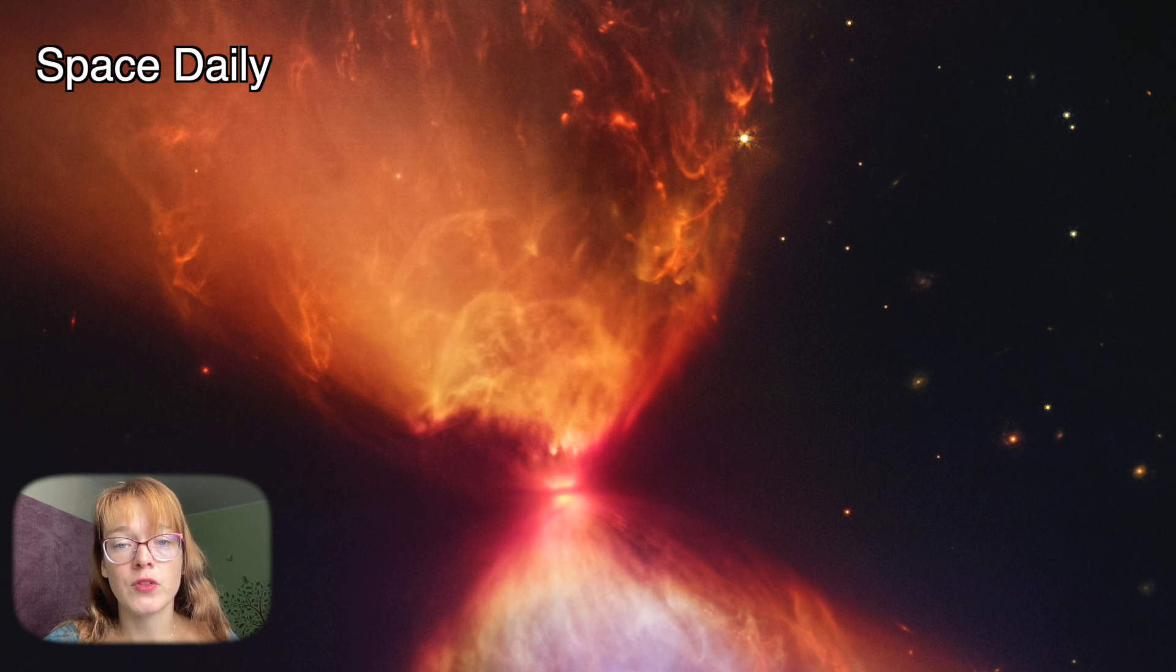The scene shown in this image reveals L1527 doing just that. The surrounding molecular cloud is made up of dense dust and gas being drawn to the center, where the protostar resides. As the material falls in, it spirals around the center.